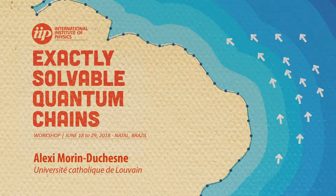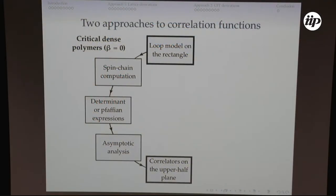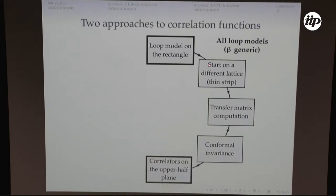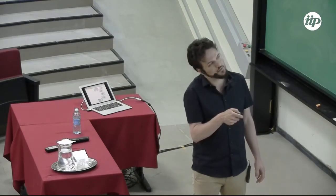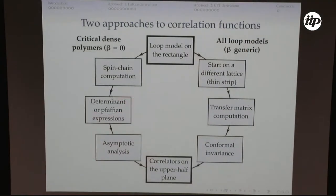Eventually, I'm going to get exact expressions for these correlators. The second method actually works for all values of the loop weight beta. It's going to use conformal invariance. Instead of studying these correlators on the rectangle, I'm going to study them on a different geometry of a thin strip, using conformal invariance to recover these correlators. My goal is to compare the two approaches and see if they yield the same results. This is basically the outline of my talk: first approach one, then approach two in the second part.